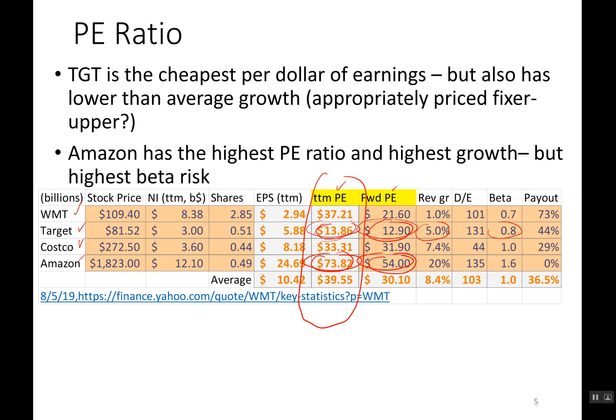Target also has one of the lowest betas, which is good. And looking at other factors, if you care about cash flows, Target is about in the middle in terms of how much of its profits it can pay out as dividends — an indicator of cash available from profits to pay shareholders. The D/E ratio is just another measure of risk. That's how we compare stocks using ratios: we look at the ratios, then consider other factors like quality of management and strategy.